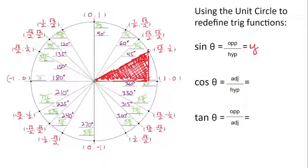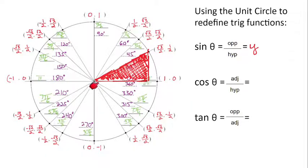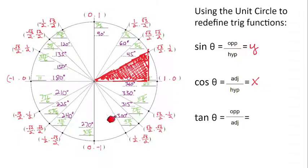You might already be predicting what cosine will be. Cosine is adjacent over hypotenuse. For a right triangle with theta of 30 degrees, the adjacent side is this horizontal distance, which is the same as the x-coordinate of this point — it's how far to the right of the origin we go. That's also just the x-coordinate, and the hypotenuse is the radius of 1. So to find cosine of a given angle, we just look at the x-coordinate. For example, cosine of 300 degrees is 1/2, and cosine of 225 degrees or 5π/4 radians is −√2/2.